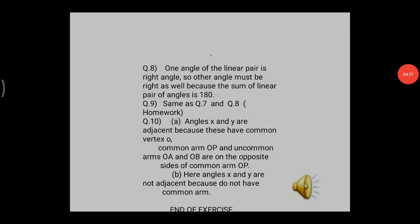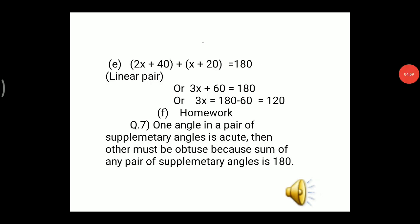Part d: the angles 2x + 40° and x + 20° form a linear pair, so their sum is 180°. Adding the x terms: 2x + x = 3x. Adding the constants: 40° + 20° = 60°. So 3x + 60° = 180°, giving 3x = 120°, therefore x = 40°.